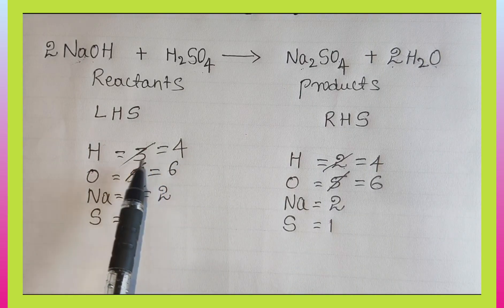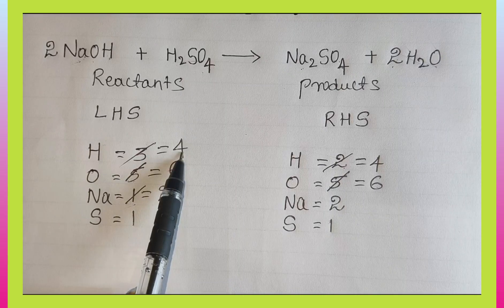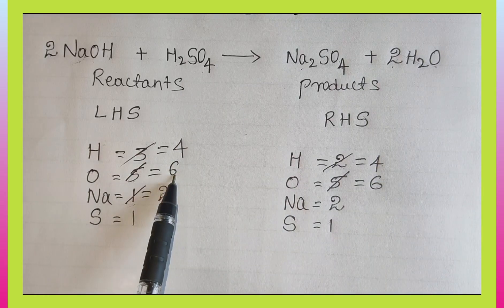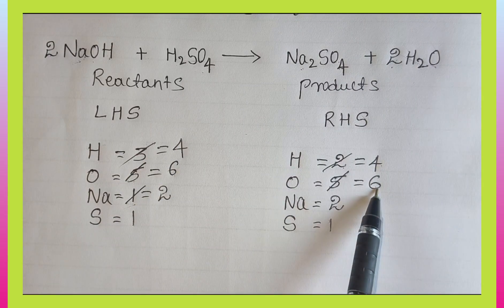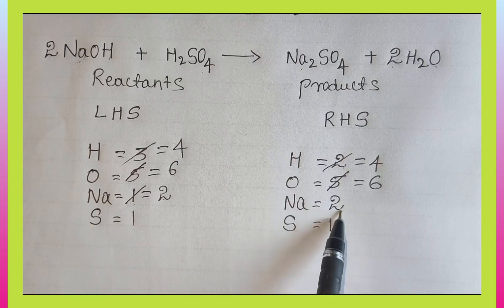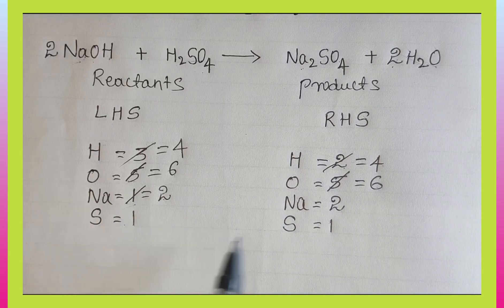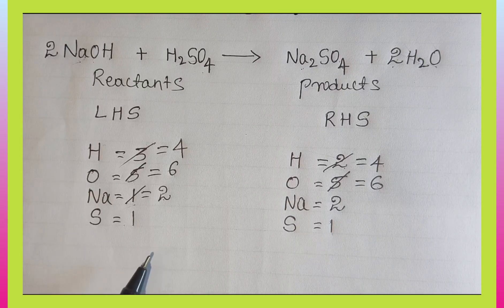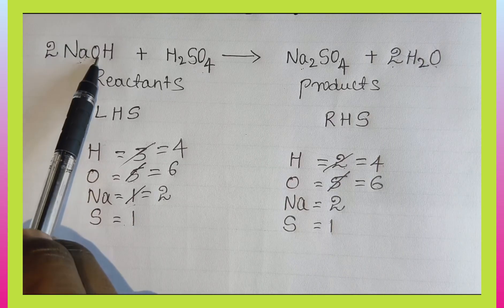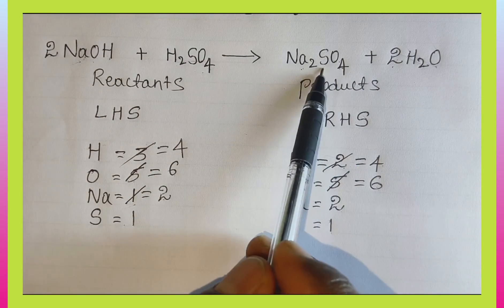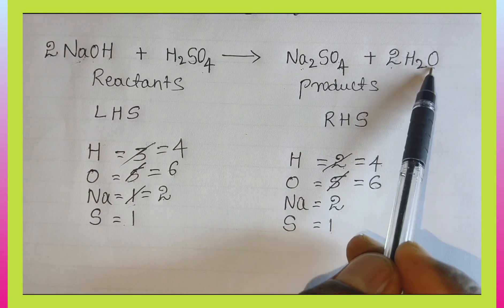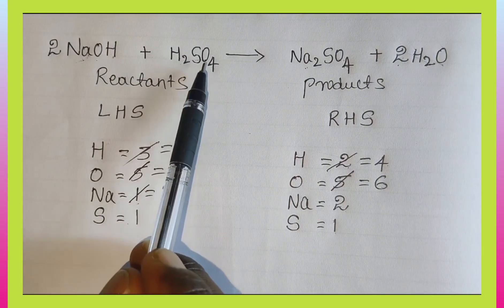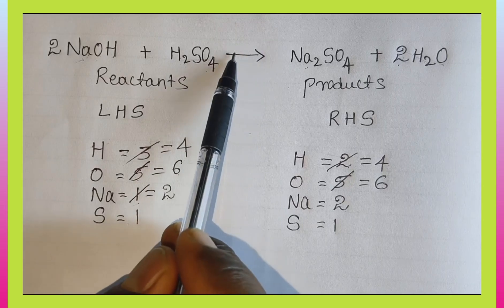Now we cross-check. LHS hydrogen: 4 — RHS hydrogen: 4, balanced. LHS oxygen: 6 — RHS oxygen: 6, balanced. LHS sodium: 2 — RHS sodium: 2, balanced. LHS sulfur: 1 — RHS sulfur: 1, balanced. This shows the chemical equation is balanced. The balanced equation is: 2NaOH + H2SO4 → Na2SO4 + 2H2O.